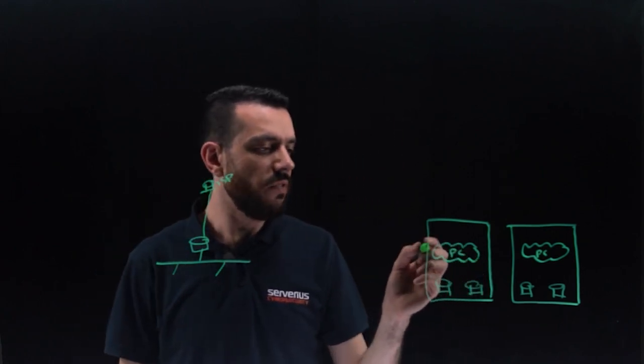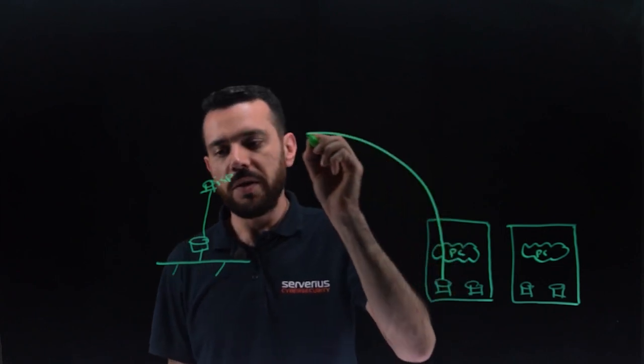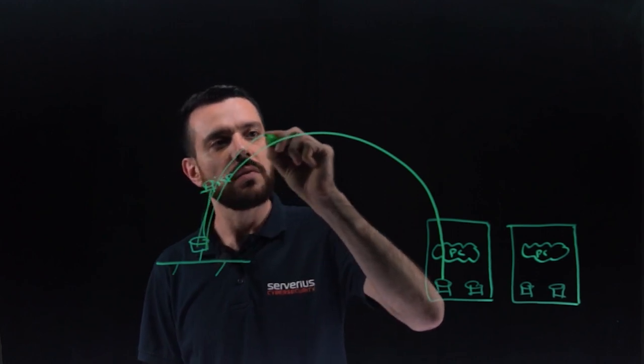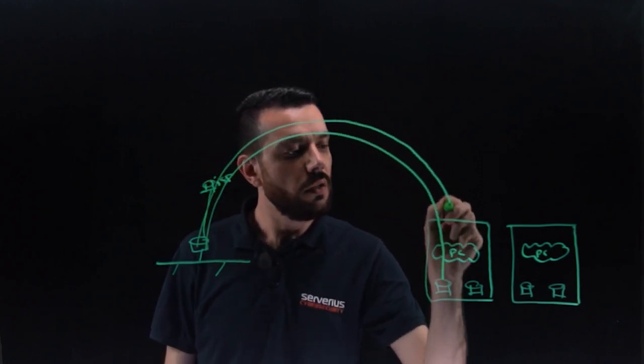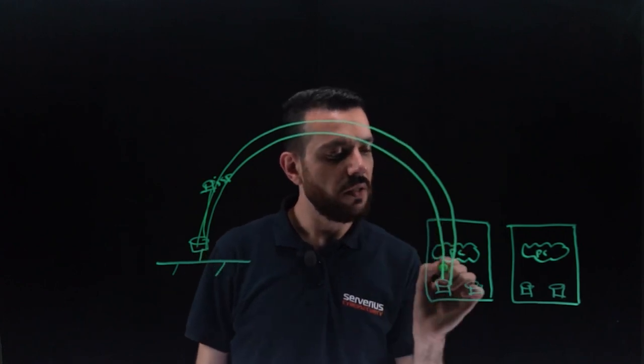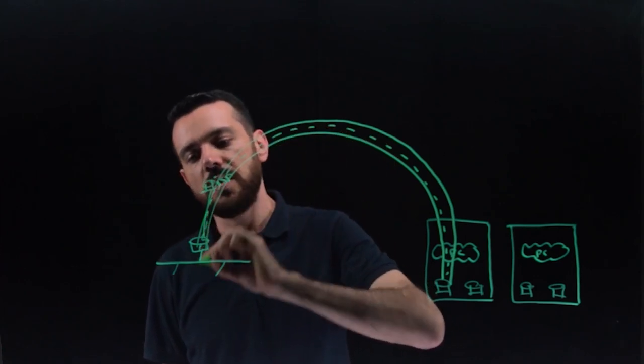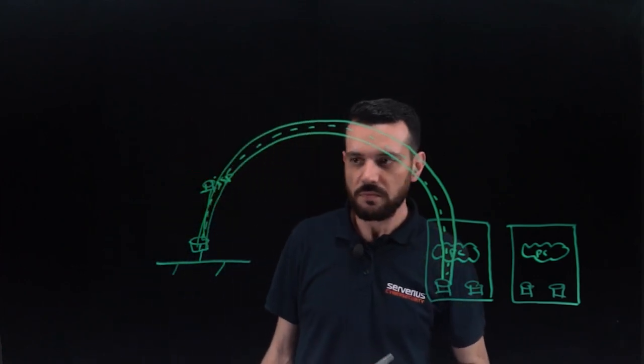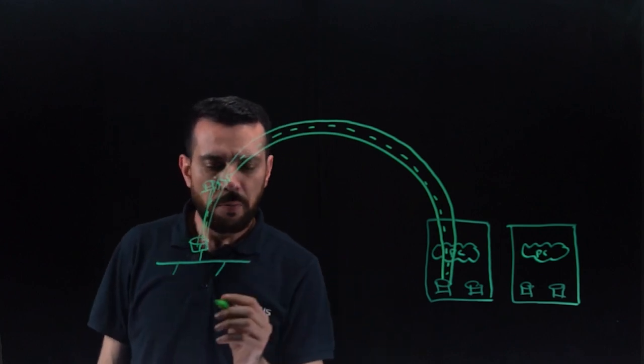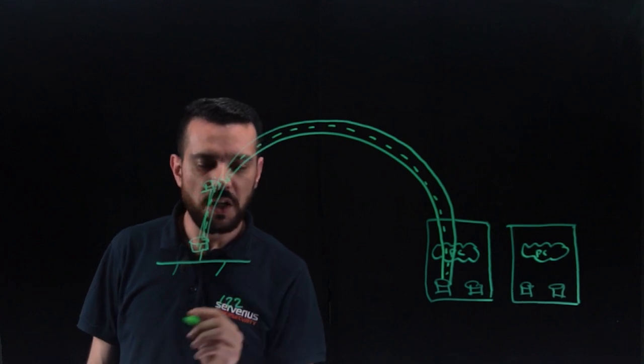We create a BGP GRE tunnel between our router and your router. And inside that GRE tunnel, we set up BGP session. Now, basically, you have prefixes. Let's say you have a /22.